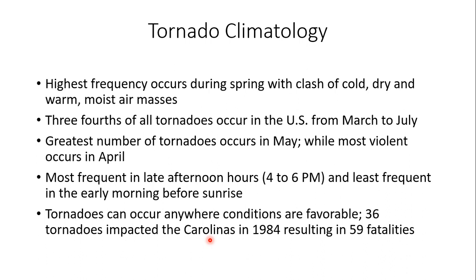The highest frequency of tornadoes occurs during spring, when you have the greatest temperature contrasts — one side of a front might be 75 to 80 degrees Fahrenheit while the cold side drops 30 to 40 degrees. It's that clash of cold, dry air from Canada and warm, moist air from the Gulf of Mexico that sets the stage. Three-fourths of all tornadoes occur in the United States from March to July. The greatest number overall occurs in May; the most violent occur in April. Tornadoes are most frequent during late afternoon hours, generally 4 to 6 p.m., and least frequent before sunrise.